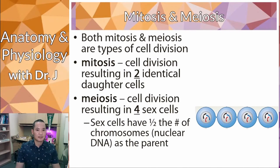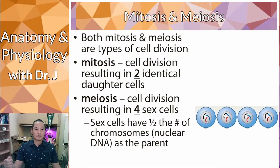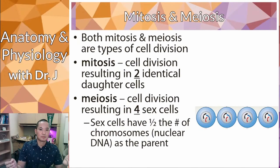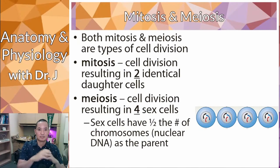Why is that? Well, when you're fertilizing a new egg, you take those two halves — one from the male, one from the female — one sperm and one ovum, and then combine those halves to form a new full set of chromosomes.